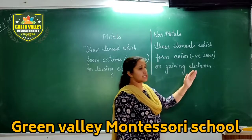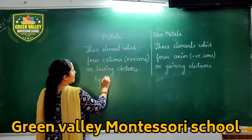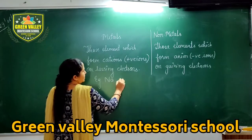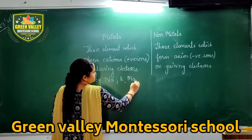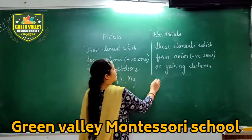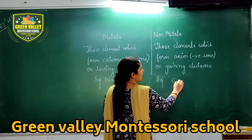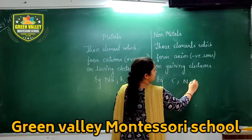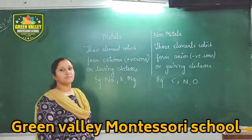Some examples of metals are sodium, potassium, and magnesium. Examples of non-metals are carbon, nitrogen, and oxygen. That's it. Thank you.